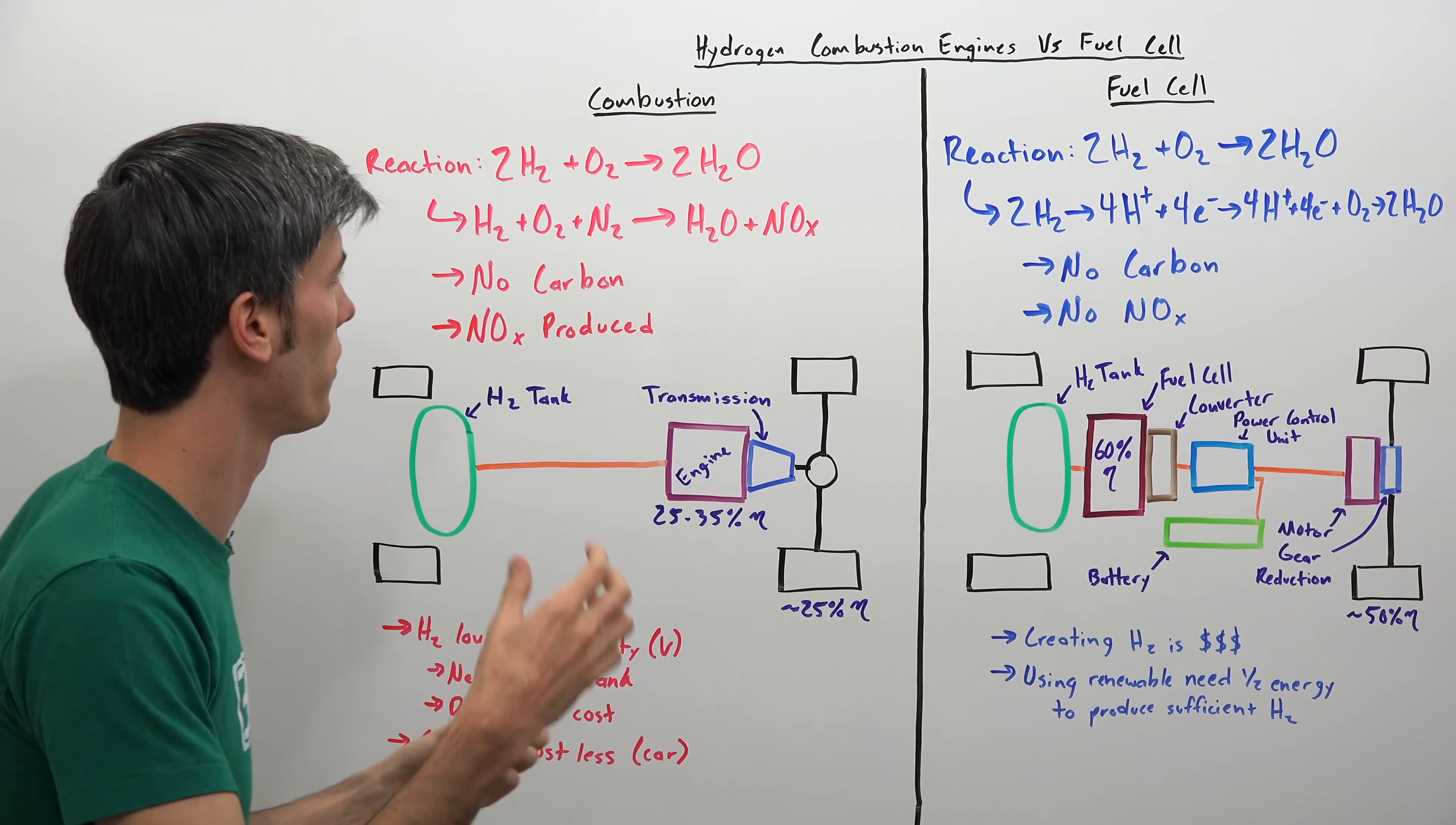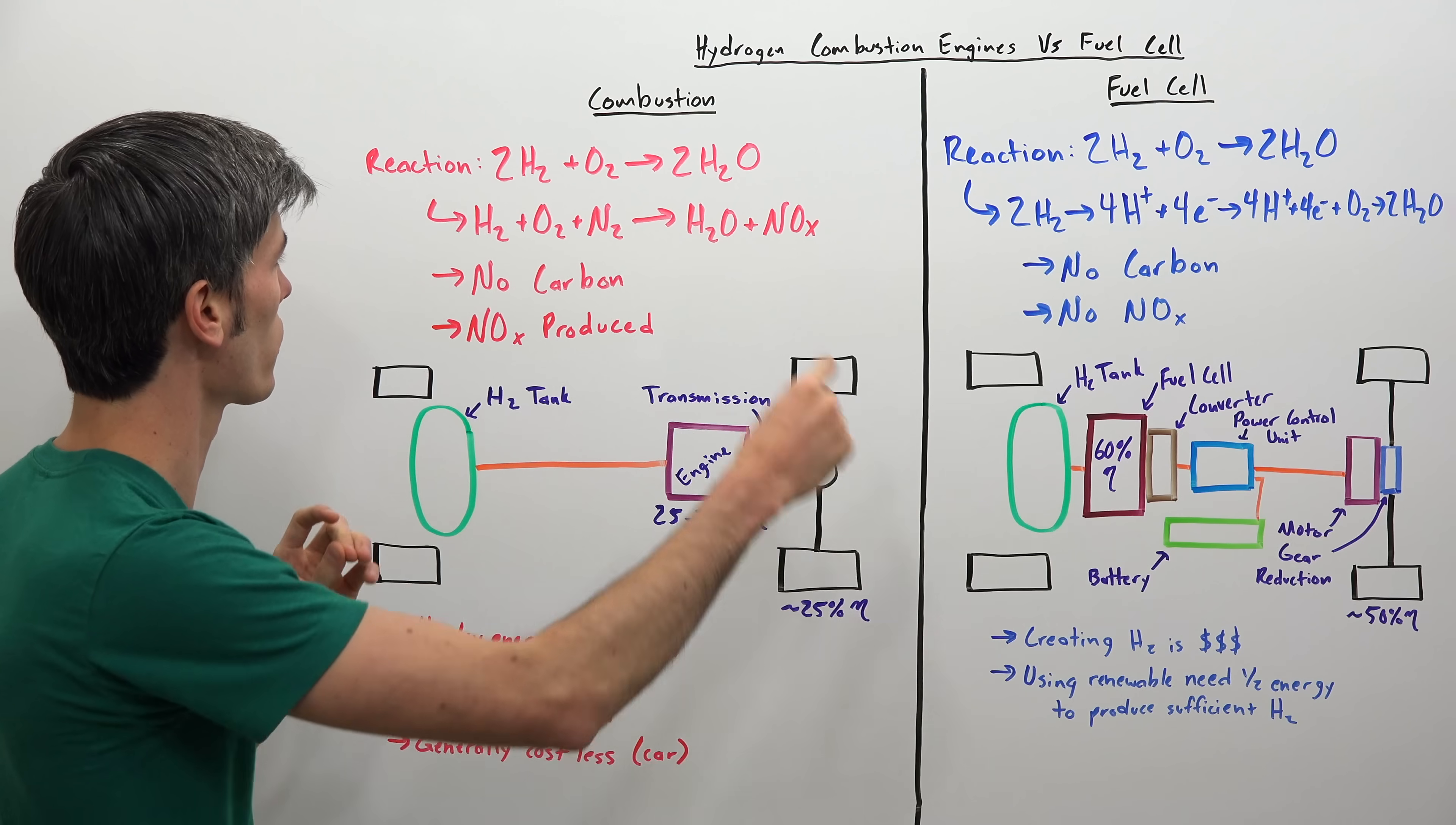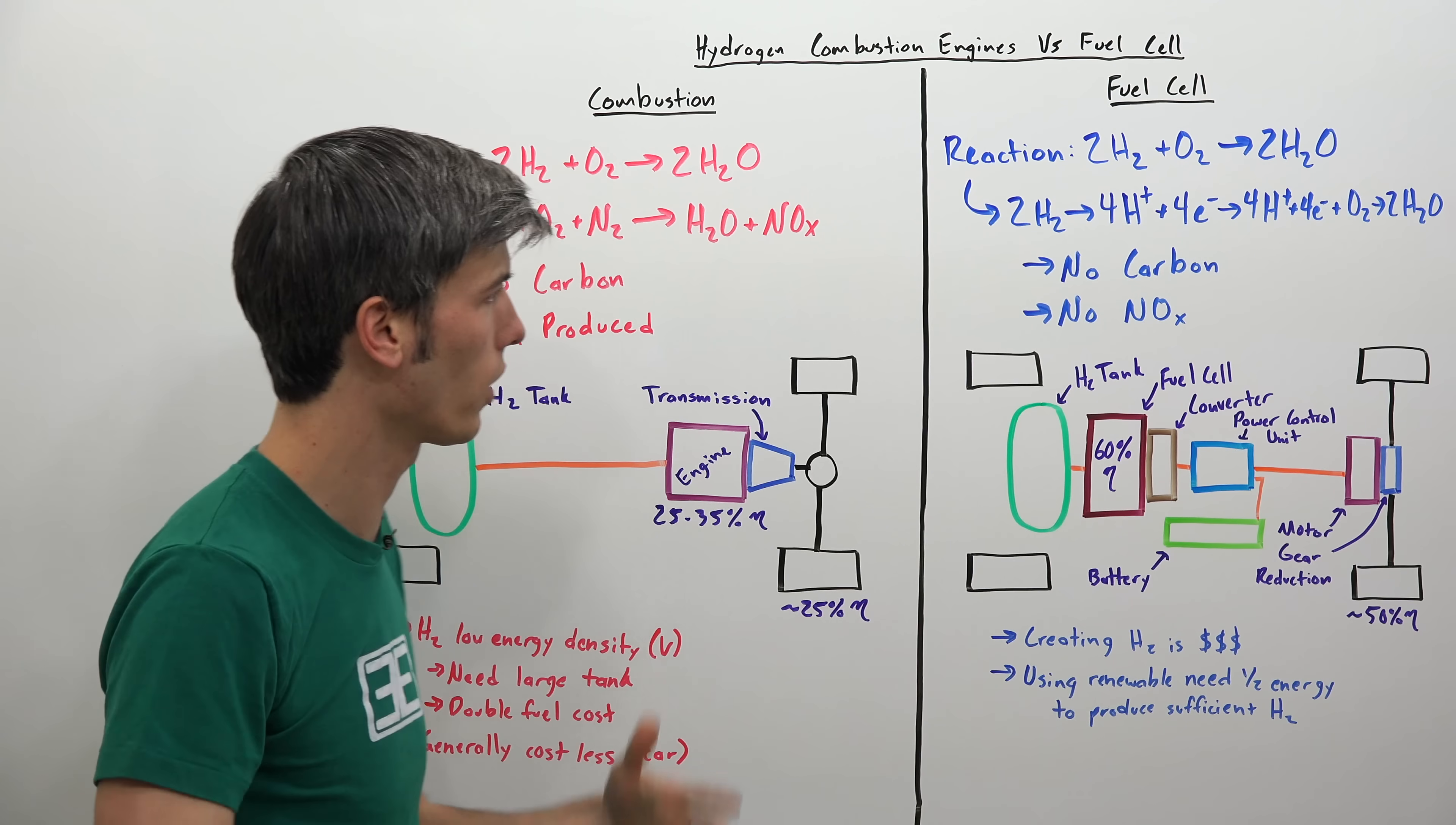So first, we need to talk about the reactions and so we're going to be looking at the process, the chemical process that's occurring with each to determine what's the advantage here for fuel cells. So ultimately, on the surface, the very basic reaction we have: 2H2 hydrogen plus O2 oxygen and then we end up with 2H2O. So from our hydrogen combustion engine, our only emission is water. That sounds awesome.